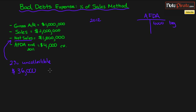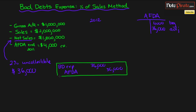$36,000 is your Bad Debt Expense, and it will be added to Allowance for Doubtful Accounts. The adjustment always has the same number for both Bad Debt Expense and AFDA because of the double-entry system. So the adjustment is $36,000. The ending balance is $4,000 plus $36,000 — both credits — giving you $40,000 as your ending AFDA balance.